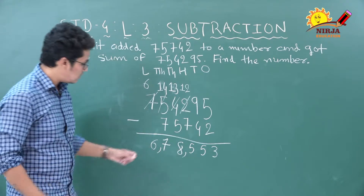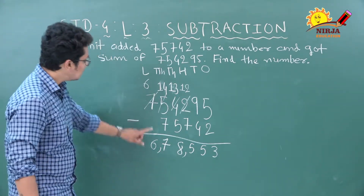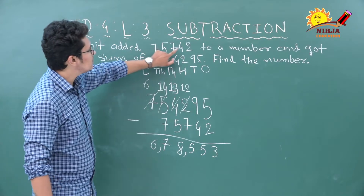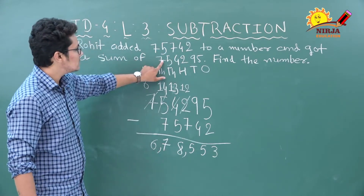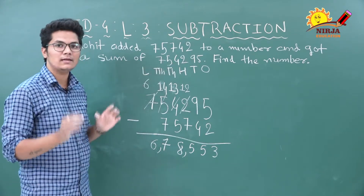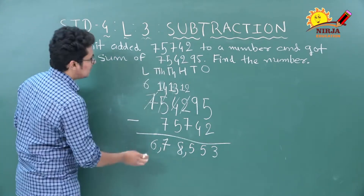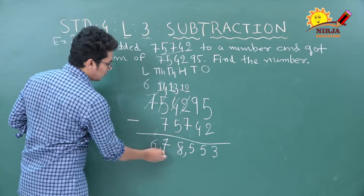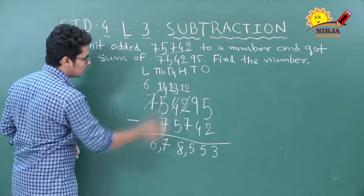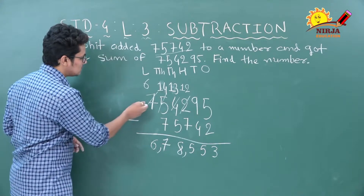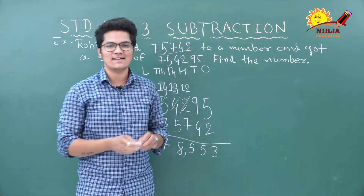The missing number was 6,78,553. Rohit added 75,742 to this number and got 7,54,295. If you want to verify, add the missing number to 75,742 and you will get 7,54,295. Solving word problems is really easy!